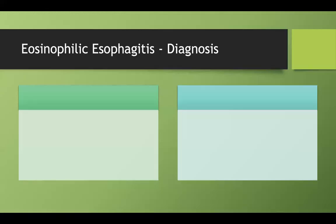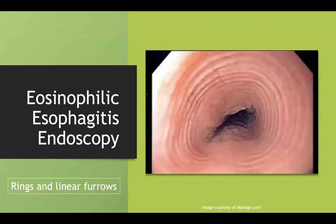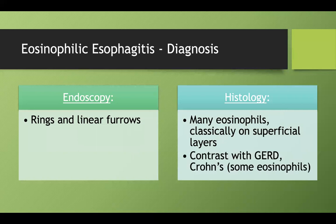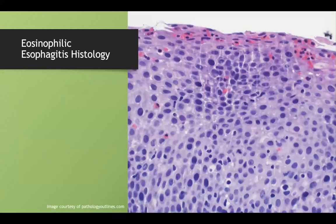On endoscopy, you're going to see rings and linear furrows — think of a Looney Tunes-style ring pattern, and associate that with eosinophilic esophagitis. On histology, you're going to see many eosinophils. Other conditions like GERD and Crohn's disease can also have some eosinophils, so don't automatically assume eosinophilic esophagitis — but if you see a ton of eosinophils, start thinking of this diagnosis.